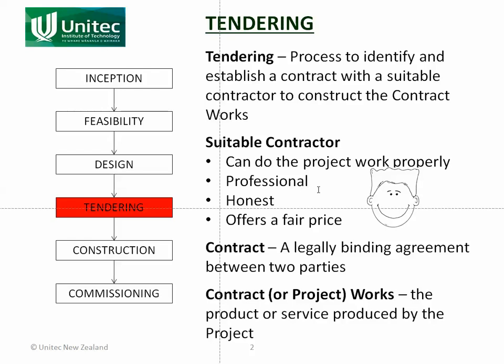So we're trying to find a contractor that fits the bill. Once we've identified who the best contractor - the best tenderer - is for this project, we need to establish a contract with them. A contract is a legally binding agreement between two parties. Legally binding means that you have to do what you have agreed to do. It's not like saying 'I'll come and visit you tomorrow' and if you don't, no problem. In this case it's legally binding. So if the contractor starts the project and decides he'd rather do something else, he can't do that.